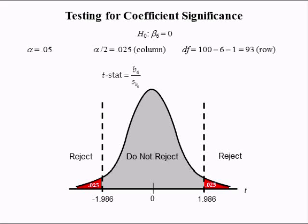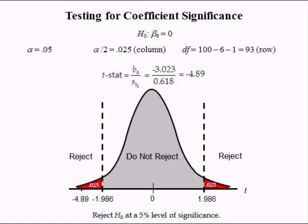We conclude the share of the population that has a high school dropout influences the decision to work. The sixth and final individual T-test has a null hypothesis of beta 6 equal to 0. The T-stat equals B6 divided by the standard error of B6, which is negative 4.89. This is in the lower tail of the distribution. Hence, we reject the null hypothesis at the 5% level of significance, meaning the unemployment rate influences the decision to work.